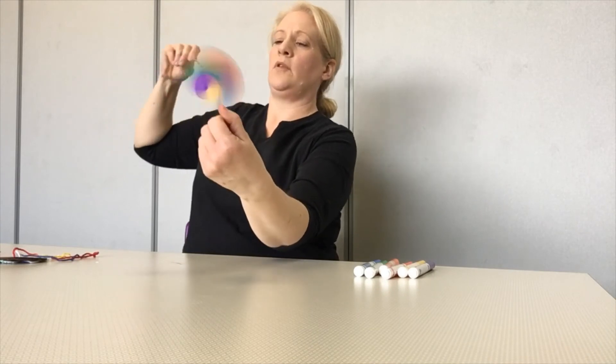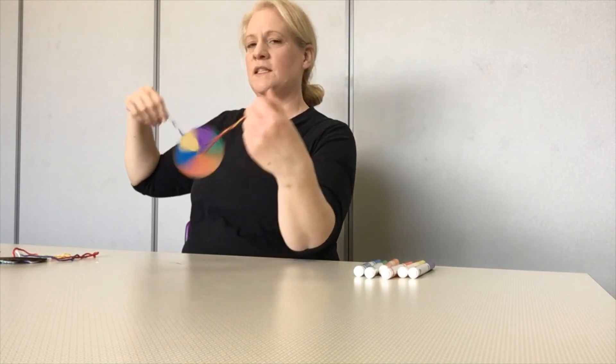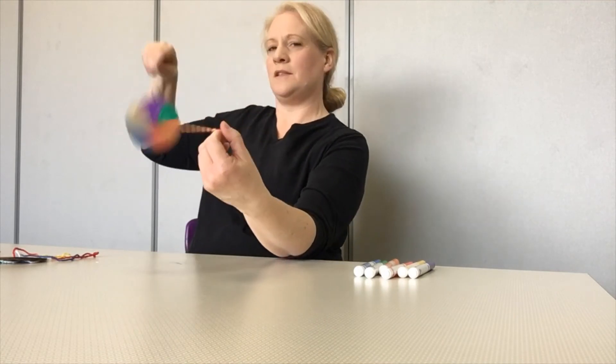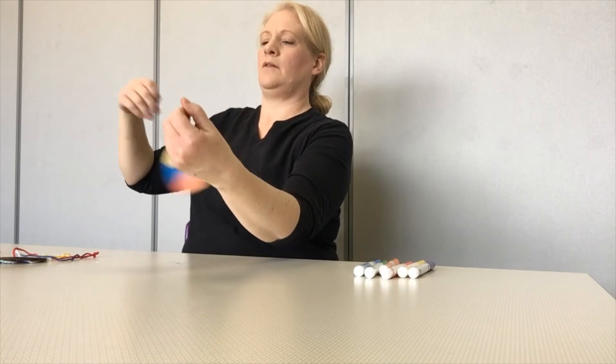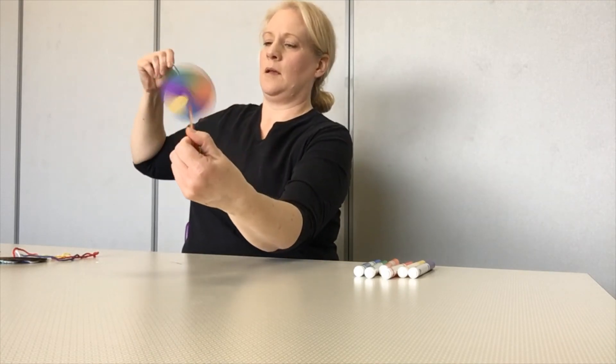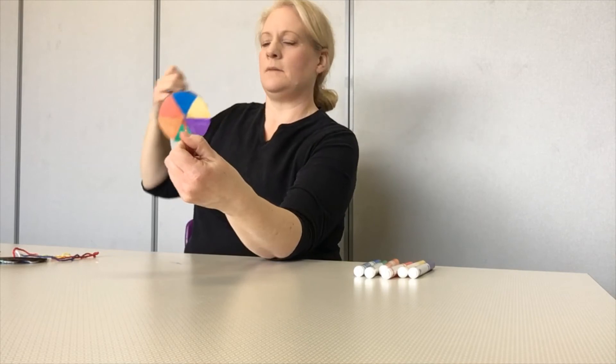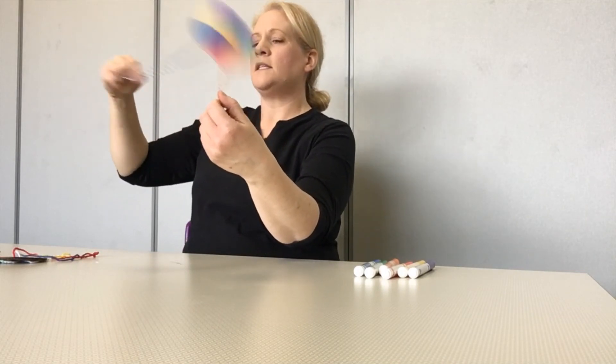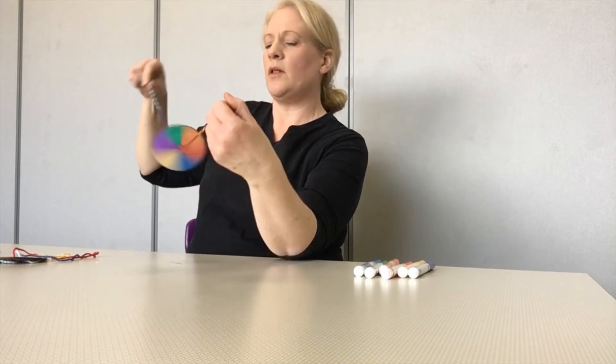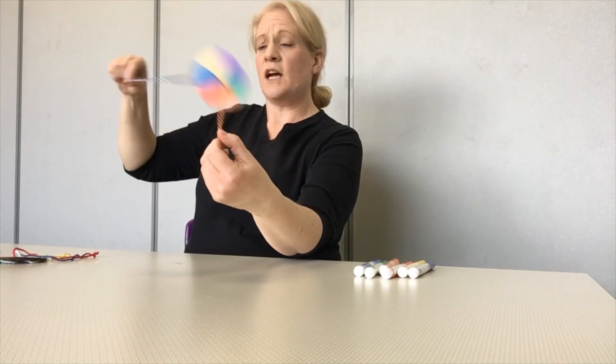There we go. Spin it and then pull it straight and kind of watch what happens to those colors. Did you see something in those colors? Did they do something a little bit different? Spin it and get it going again. Spin it and pull it straight. Sometimes they go so fast they almost look white. Sometimes they look yellow and purple. Sometimes I've got an orange color.